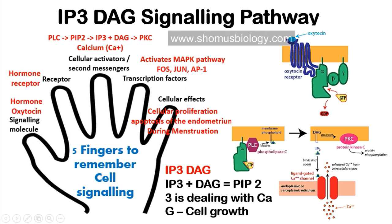Looking at the actual pathway diagram: when oxytocin binds with its receptor, it activates a G-protein coupled receptor (GPCR), which activates the G protein, which in turn activates phospholipase C. Phospholipase C breaks down PIP2 into IP3 and DAG. DAG activates protein kinase C, while IP3 binds with a ligand-gated calcium channel on the endoplasmic reticulum or sarcoplasmic reticulum, causing it to open and release calcium ions into the cytosol.